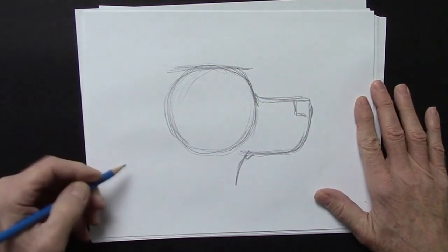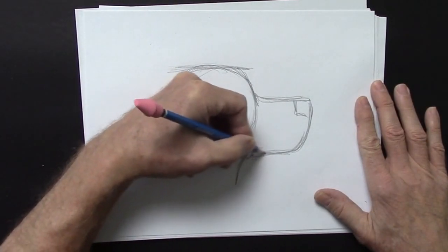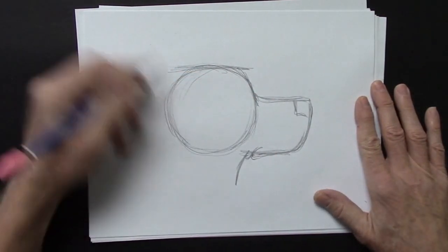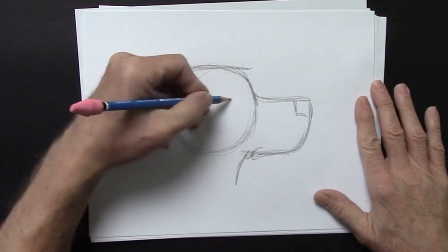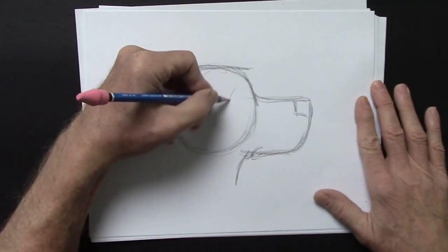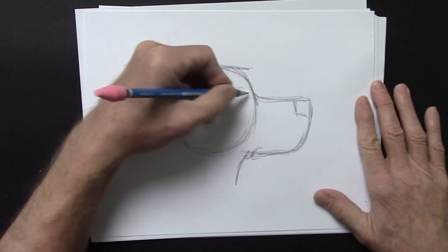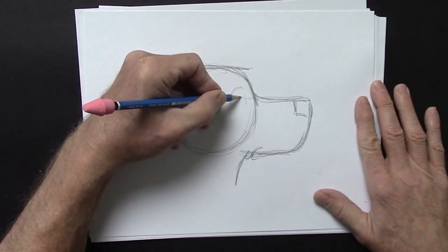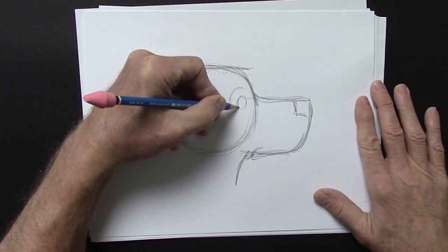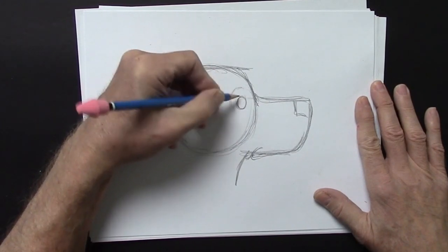And we'll bring the neck down this way. I'll put a little crease here for the mouth, like so. And right here where this line is, I'm going to put the eye. The eye goes right in the middle where the snout is.